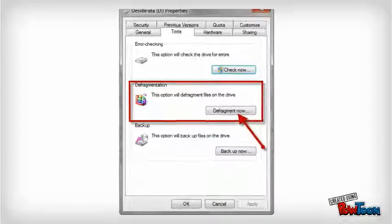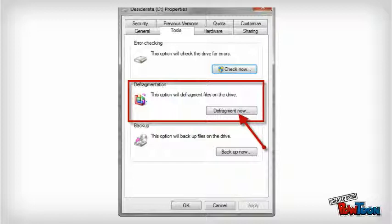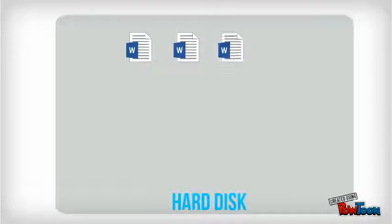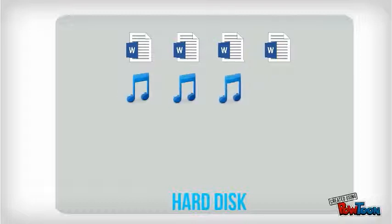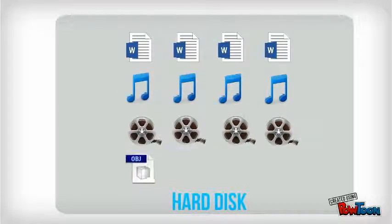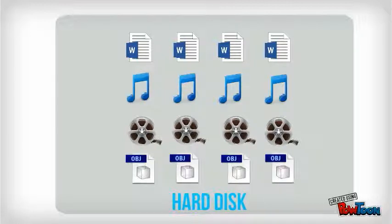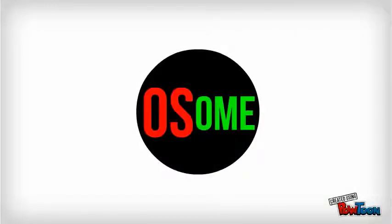The solution to this problem is defragmentation. Disk defragmentation arranges all the data of the same file contiguously, adjacent to each other. The data on the disk is now arranged, so it is now easier for the disk head to read the data of a file. The head will read the data in one single reading in one direction. It helps your computer's performance and makes accessing files much faster.